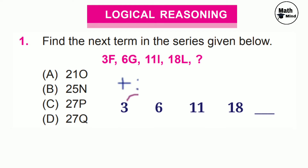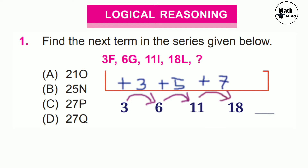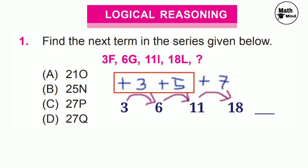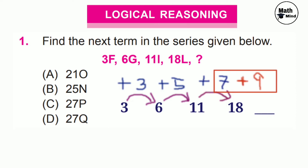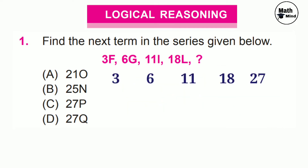3 plus 3 gives 6; 6 plus 5 gives 11; 11 plus 7 gives 18. We have to find the pattern in the added numbers: 3 plus 2 is 5, 5 plus 2 is 7, so 7 plus 2 is 9. Adding 9 to 18 we get 27. Regarding the options, C and D are still possible; A and B are cancelled.